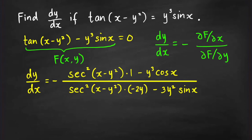For ∂f/∂y, treating x as constant: sec²(x − y²) times the derivative of (x − y²) with respect to y. Since x is constant, this gives 0 minus 2y, so we get −2y·sec²(x − y²), then minus the derivative of y³·sin(x) with respect to y, which is 3y²·sin(x).